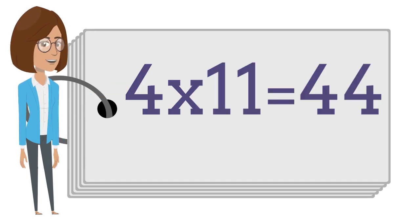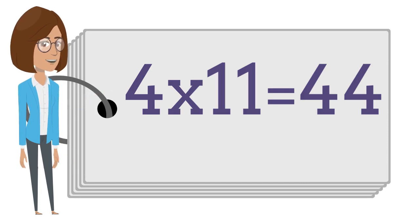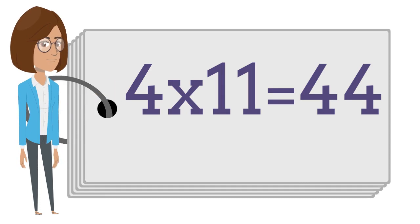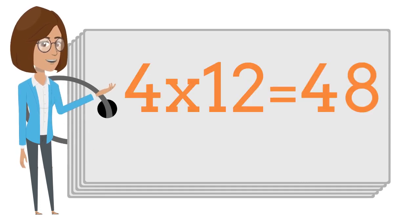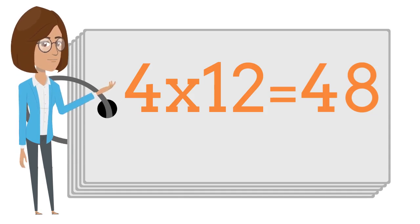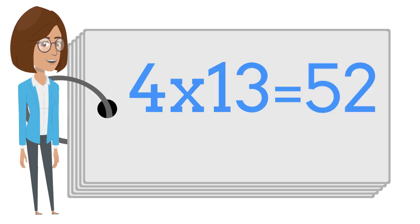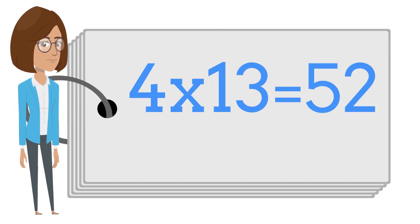4 times 11 is 44. 4 times 11 is 44. 4 times 12 is 48. 4 times 12 is 48. 4 times 13 is 52. 4 times 13 is 52.